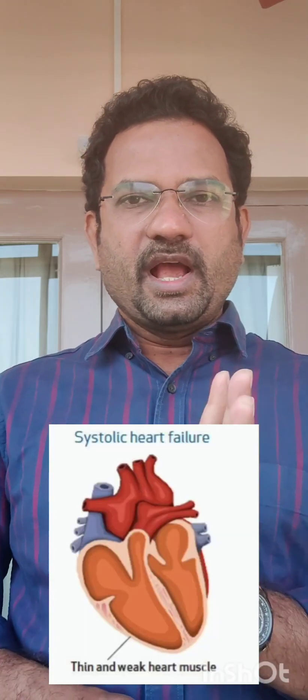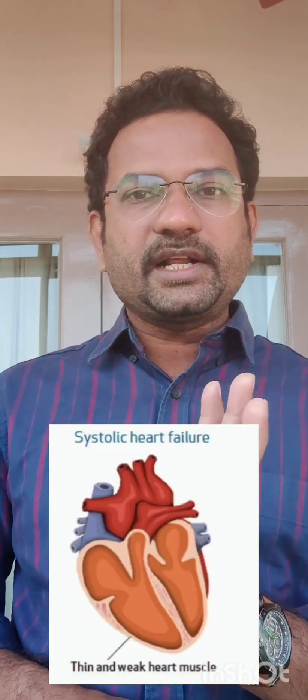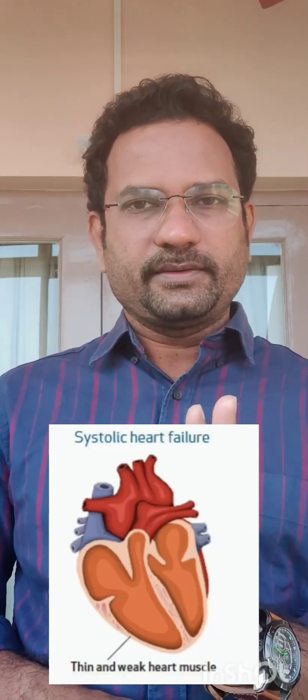Now why does it happen? There are three major dysfunctions. First, systolic dysfunction — the heart is not able to contract adequately. Systolic means contraction. Why does it happen? It either happens because of long-term hypertension or ischemia. Both of them may cause systolic dysfunction.